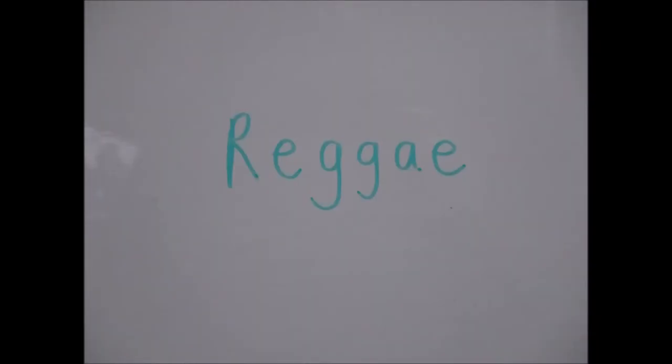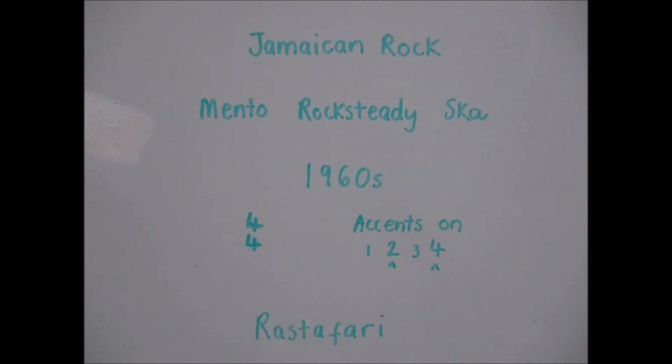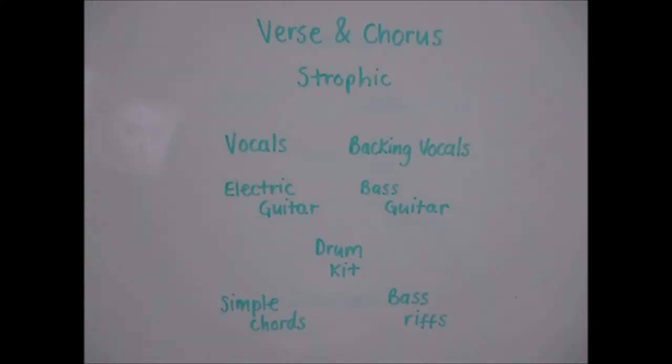Reggae. Reggae music stems from Jamaican rock. It has sub-genres of mental, rocksteady and ska. It came to light in the 1960s. Reggae music has a time signature of 4-4 with accents on 2 and 4. The lyrics often reference the Rastafari. Reggae songs have verses and choruses following a strophic form. As well as vocals, there's backing vocals, electric guitar, bass guitar, drum kit, simple chords and bass riffs. Here are some examples.